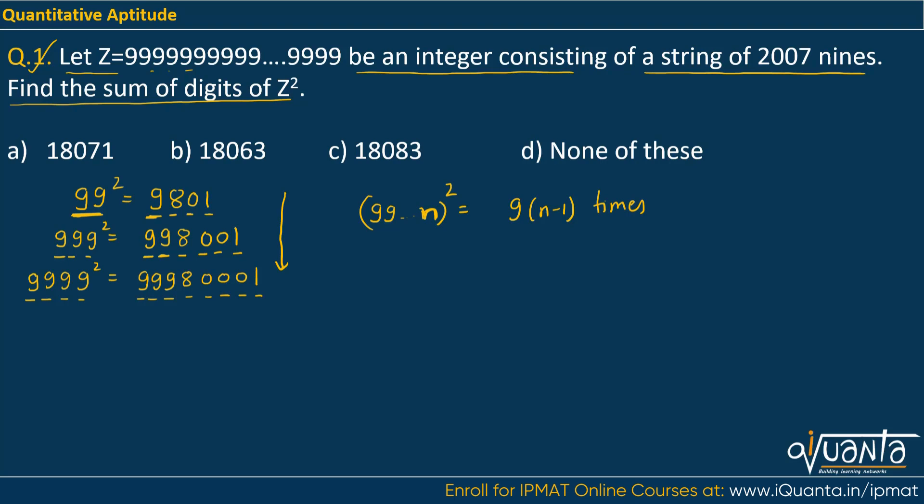The pattern we can identify is: if the digit 9 is written n times and we find its square, we are getting 9 repeated n-1 times. When I find 99² I get 9 once. Triple 9² gives 9 twice. If we look at 8, it's always single. If we talk about zeros, they're also increasing but equal to n-1 times. Finally, 1 occurs only once in the end.